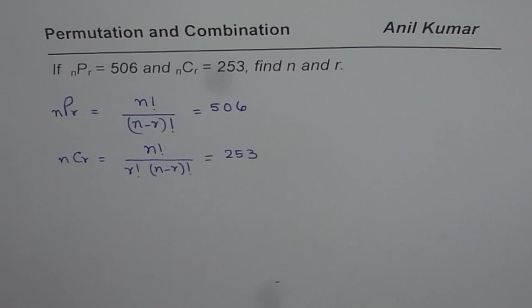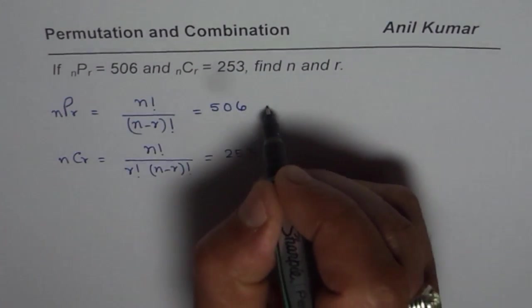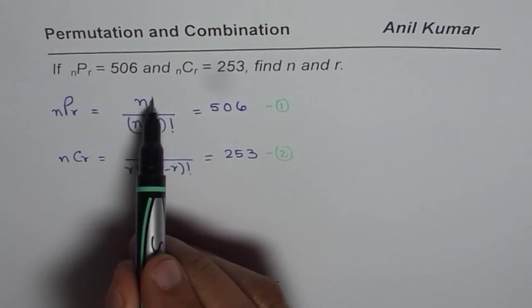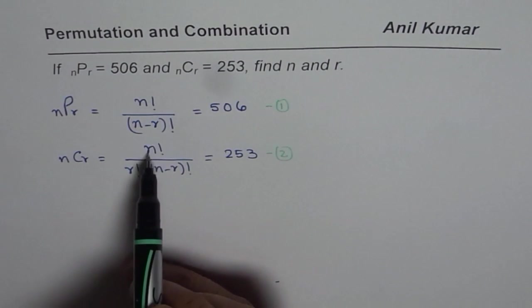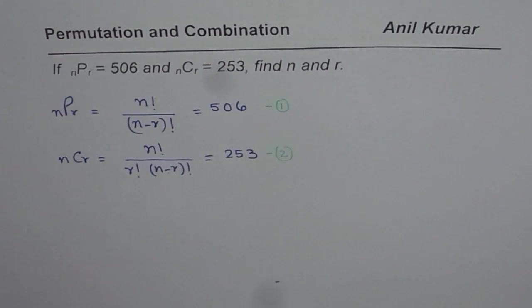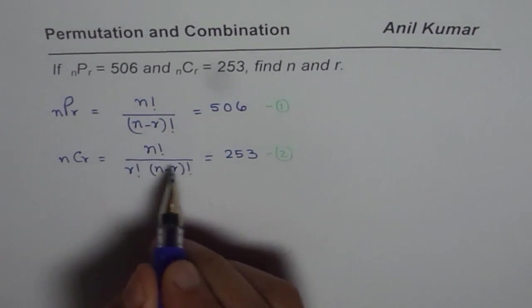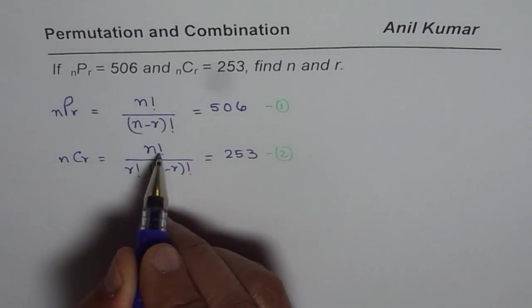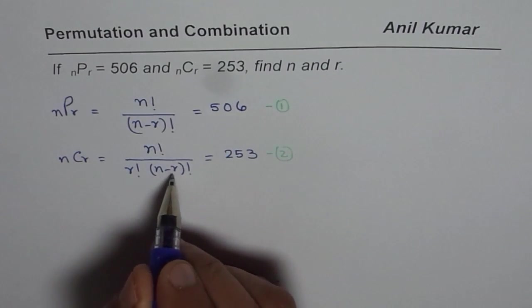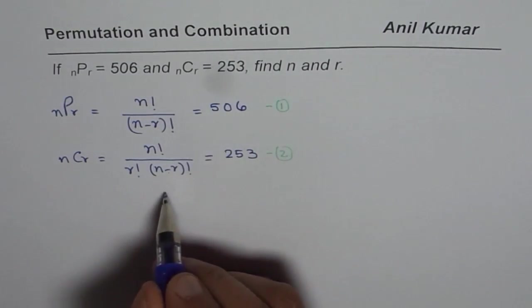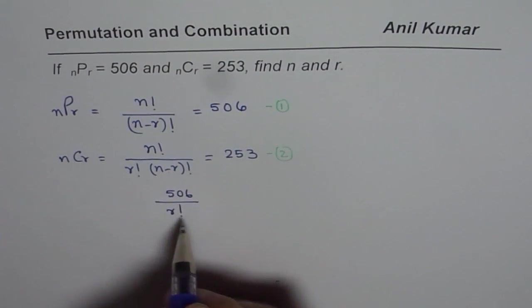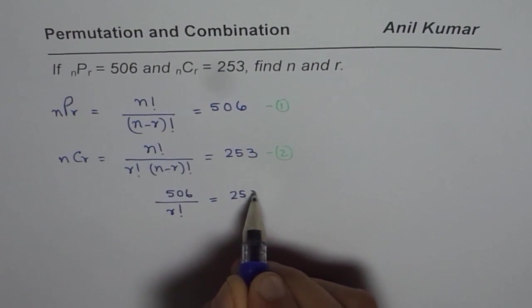Now, if you analyze equation 1 and 2, what we see is that N factorial by N minus R factorial — this part — is 506. So I could write nCr as equal to N factorial by N minus R, which is 506, and rewrite this as 506 over R factorial.